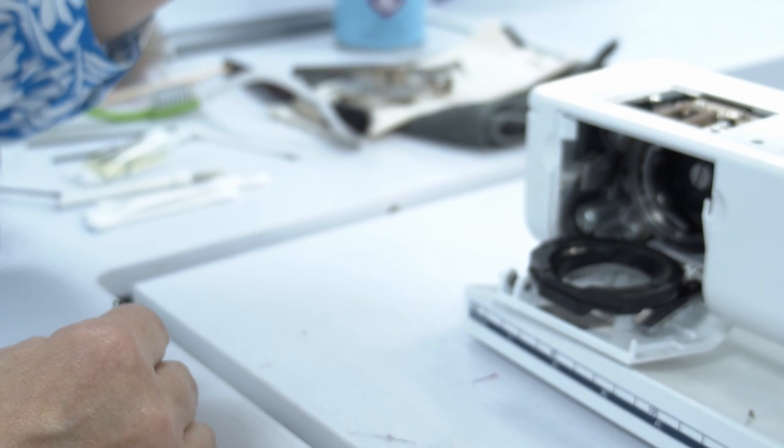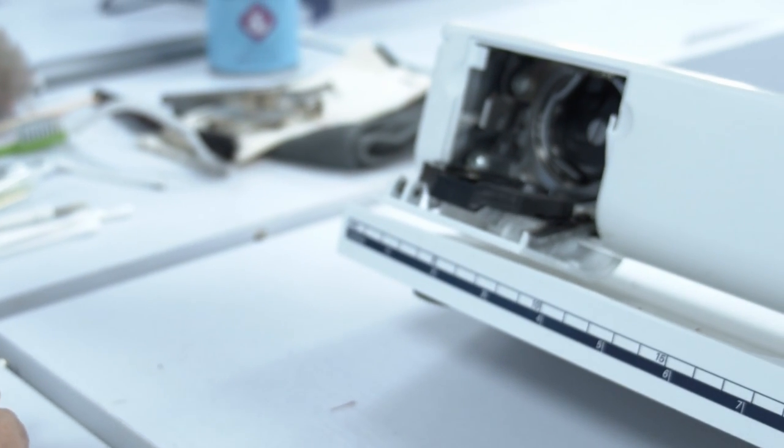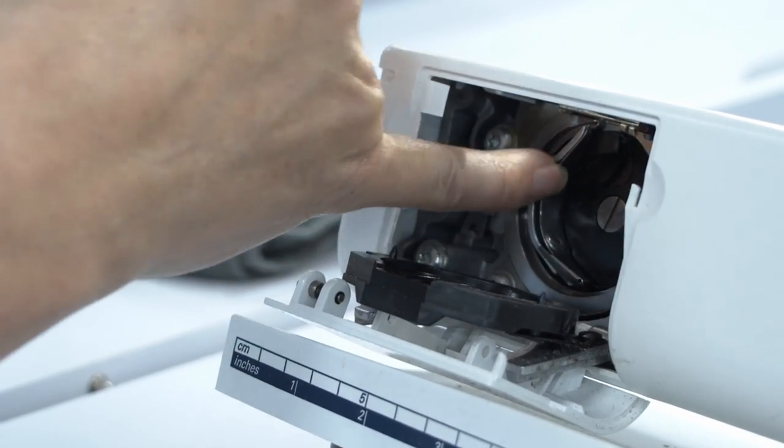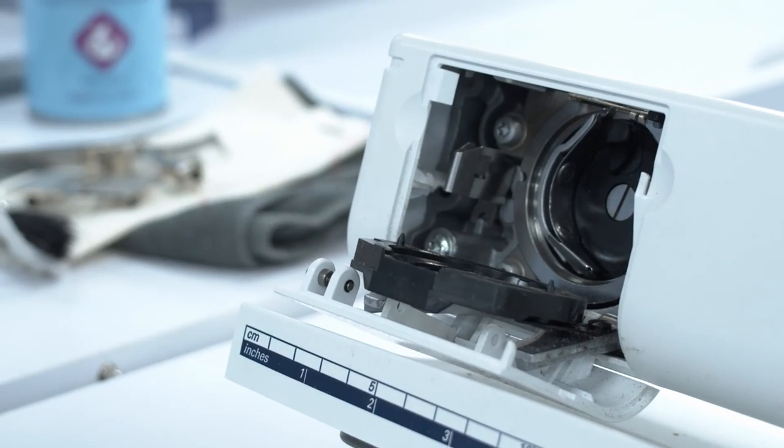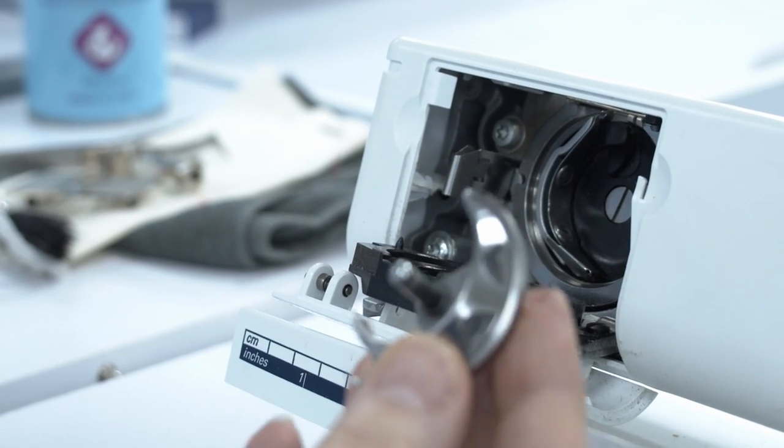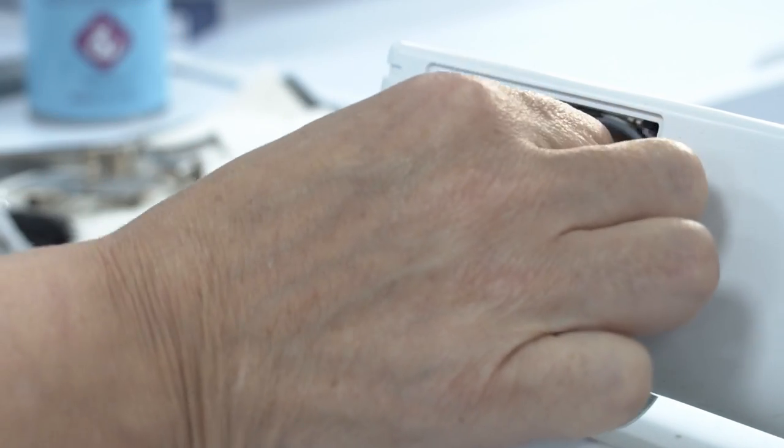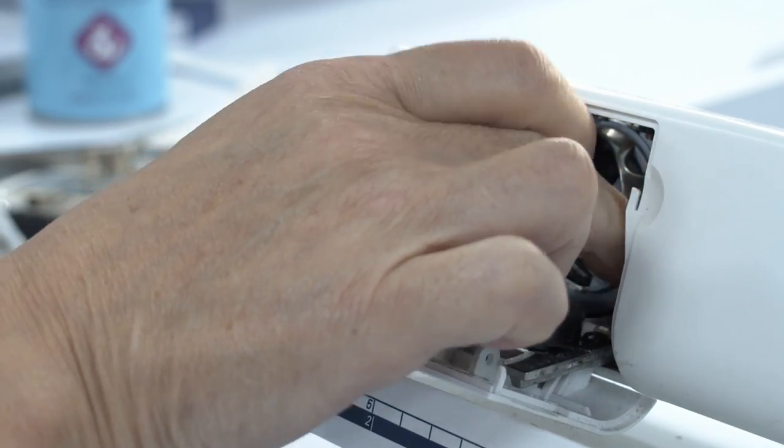What I'm going to do is tilt the machine, and hopefully you can see in. Because the needle is in the needle up position, there's a semicircle here on the left-hand side. That means I need to put the hook in on the right-hand side like that and just lay it like that.